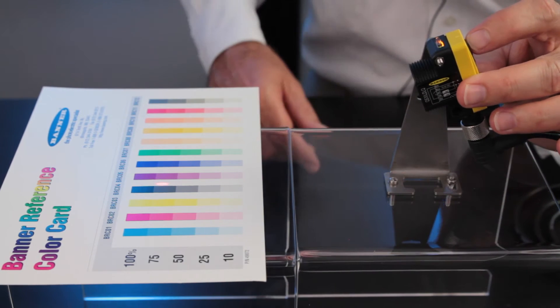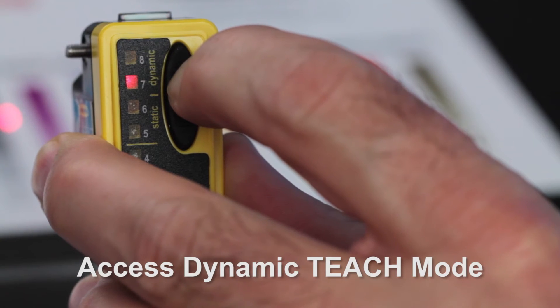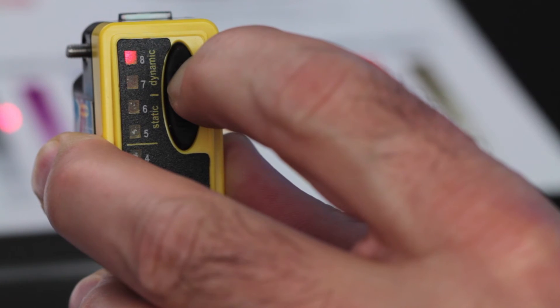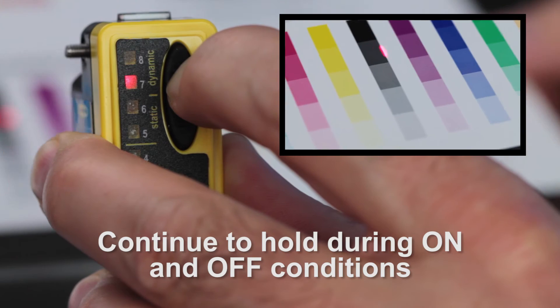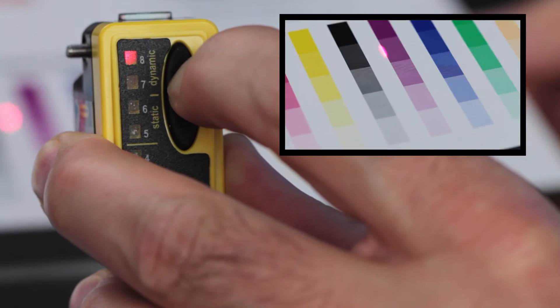To enter Dynamic Teach mode, press and hold the Dynamic Teach Plus button until LED 7 and 8 flash. Continue to hold the Plus button while on and off conditions pass by the sensor, which we're simulating with this color card.